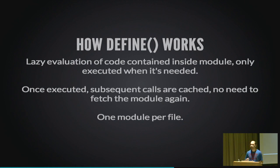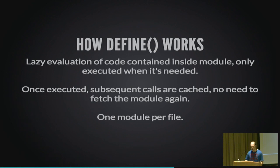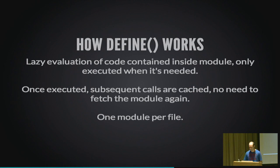More about `define`: it has lazy evaluation — code inside only executes when needed, making your application load faster. You get a reference to the module up front, but execution is deferred until you actually call it. Once executed, subsequent calls are cached by RequireJS, so there's no performance overhead of fetching it again. You write one module per physical JavaScript file — a one-to-one mapping for clarity, so your codebase stays clean and easy to navigate.